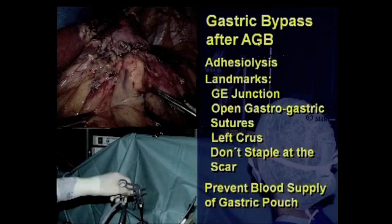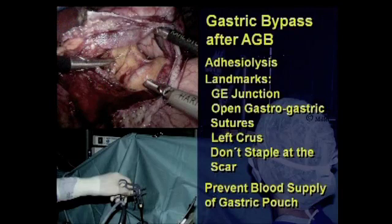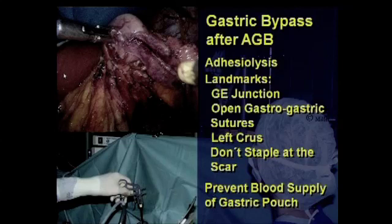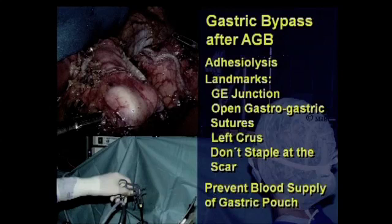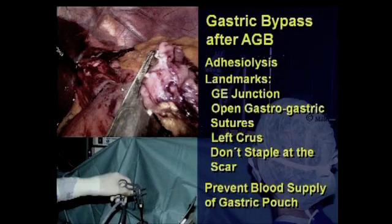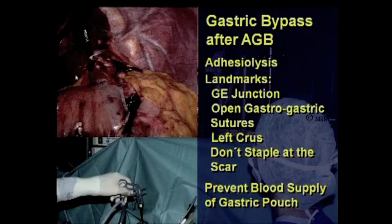We staple and create the pouch — pay attention, because posteriorly you have adhesions, and here you can see the splenic vessels waiting for disastrous bleeding. We perform a circular stapled anastomosis. Here is the end of the gastric pouch creation: the gastric pouch is around five to six centimeters in length, very small. A circular gastrojejunostomy and removal of the anterotomy with the linear stapler. That's the gastric pouch and gastrojejunostomy — that is redo surgery after gastric banding.